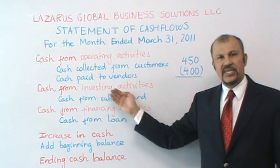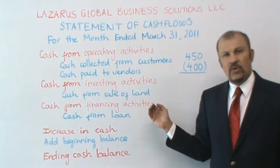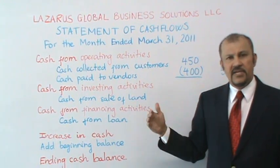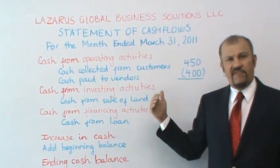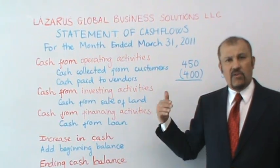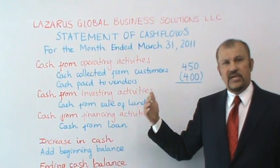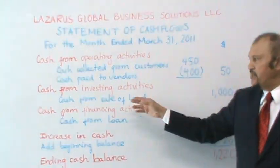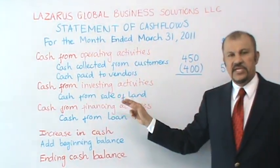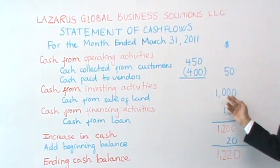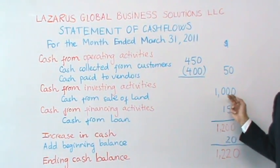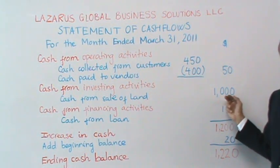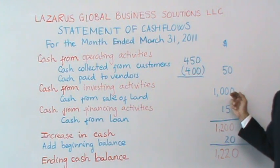The next section is the investing activities. The broad guideline for what goes here would be the purchase or sale of your long-term assets or any long-term investments. As an example here, I have one item that says cash from sale of land — $1,000. Since this is the only item, we end up with a $1,000 inflow from our investing activity section.